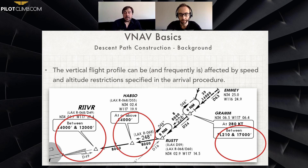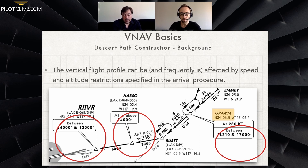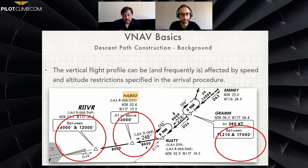The vertical flight profile can be — and frequently is — affected by speed and altitude restrictions specified in the arrival procedure. For example, between flight level 210 and 17,000 feet there's a holding point, then you continue on the same track bound to a fix and make a right turn on a 248 track to the next point, HAPSO, where you have to be at or above 14,000 feet — and the VNAV is going to help you through all of this profile.